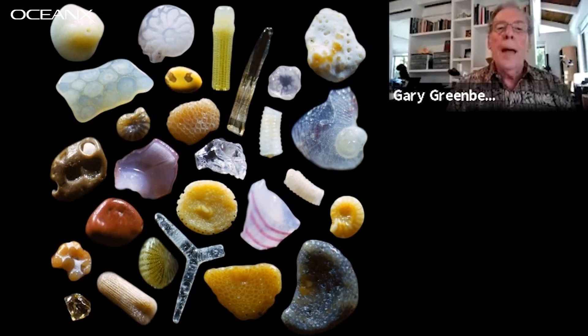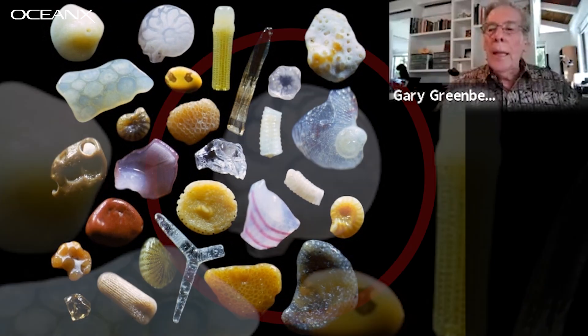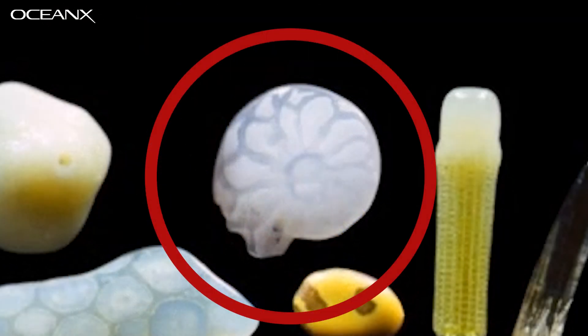Just to the left of that, there's this round thing that has this interesting sort of design in it. That's a foraminifera. One of the things about foraminifera is it's a good way to tell where sand is from, because different foraminifera live in different ecological zones.